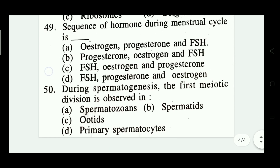Question number forty-nine: sequence of hormones during menstrual cycle is — oestrogen, progesterone and FSH; progesterone, oestrogen and FSH; FSH, oestrogen and progesterone; FSH, progesterone and oestrogen. Which one is right? Option C — FSH, oestrogen and progesterone is the right answer.